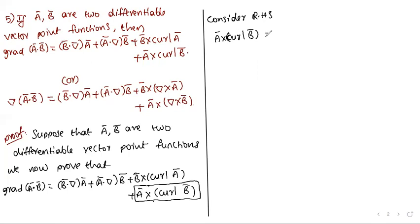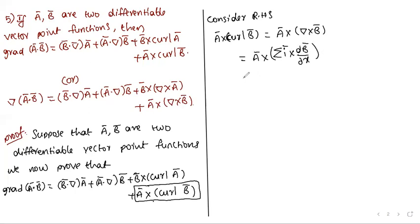Consider Ā cross curl(B̄), that is Ā cross (del cross B̄). Using summation: Ā cross (del cross B̄) equals summation of Ā cross [i-bar cross ∂B̄/∂x]. Applying the vector triple product formula.